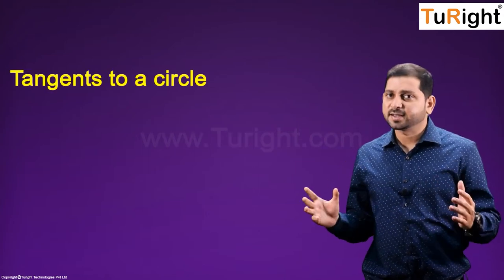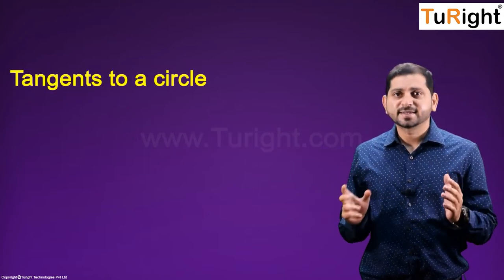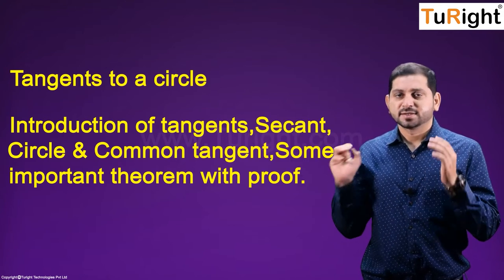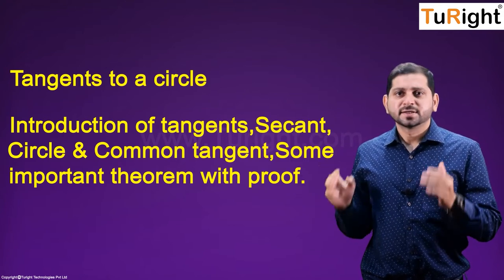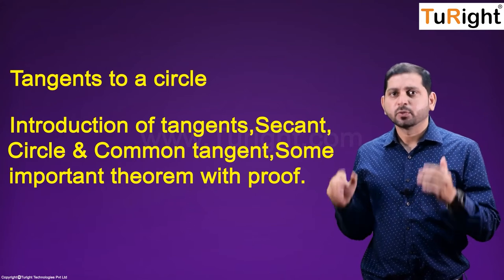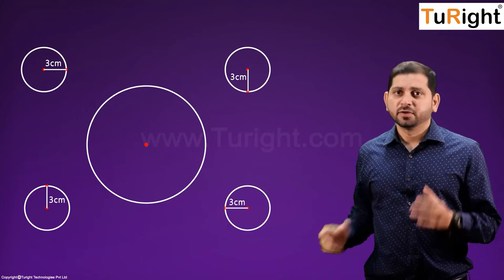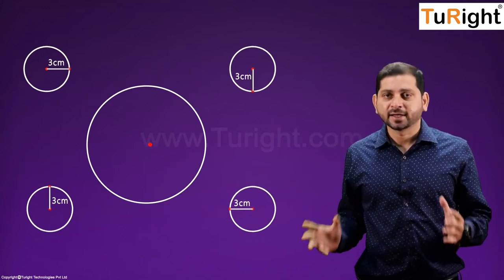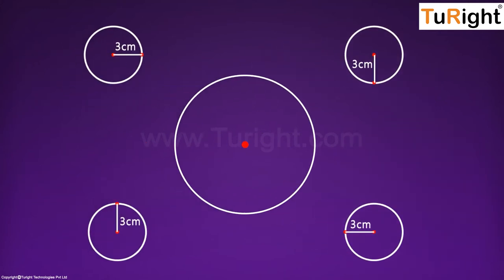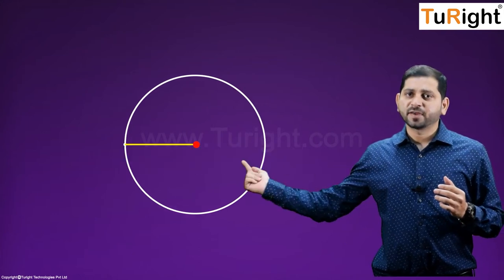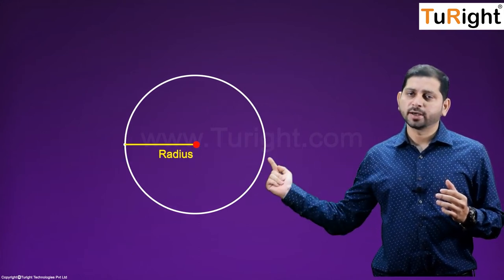Today under circles, let's learn about introduction to tangents, second circles, and common tangents, along with some important theorems with proof. We have studied in class 9 that a circle is a collection of all points in a plane which are at a constant distance — that is, the radius — from a fixed point called the center.